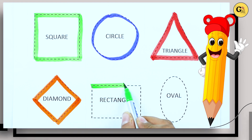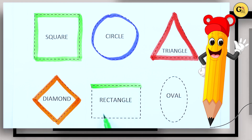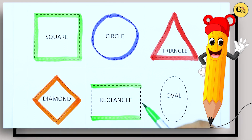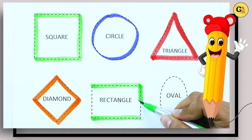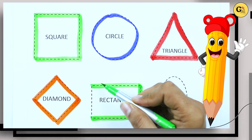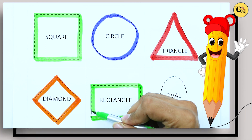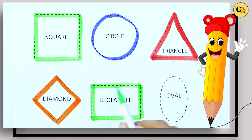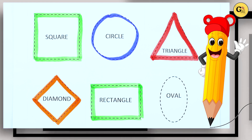One slipping line, two slipping line, one standing line, one standing line. It's a rectangle with green color.